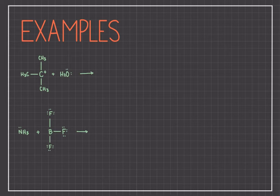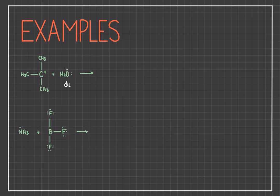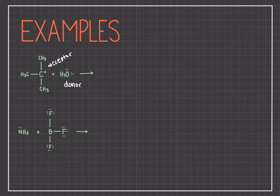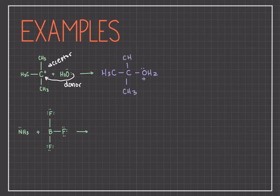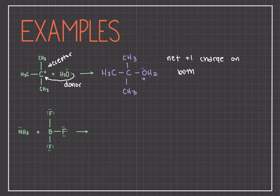Now for a few more examples — I encourage you to try these problems by yourself first, then pause if you want. The donor seems to be the oxygen on the H₂O, with the electron pair it can donate. The central carbon on the left reactant seems like the ideal candidate for an acceptor because of that plus one charge. If we draw our curved arrow notation, showing the electron pair going to that carbon, we can see that a bond is made between the carbon and the oxygen, as shown in the product. Again, there was a plus one charge on the carbon in the reactants and now there's a plus one charge on the oxygen in the products — the net plus one charge is maintained on both sides.